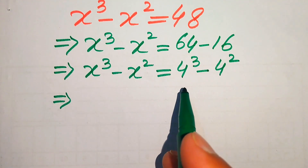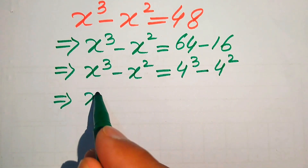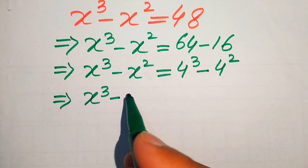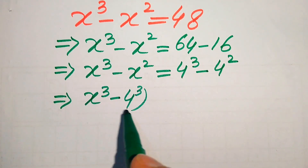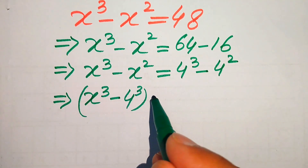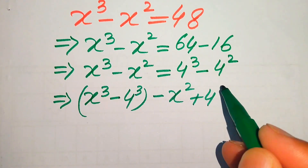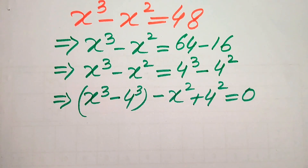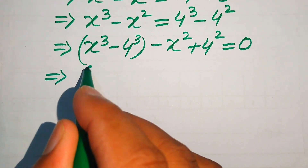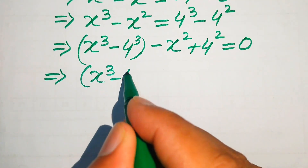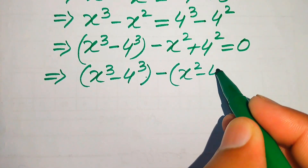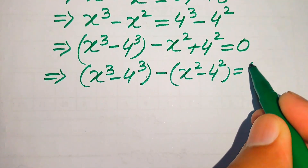We move the terms from the right hand side to the left hand side, making pairs of cubic terms and square terms. We pair x cubed with 4 cubed — moving 4 cubed to the left makes it minus 4 cubed. Moving minus 4 squared to the left makes it plus 4 squared, giving us x cubed minus 4 cubed minus (x squared minus 4 squared) equals 0.